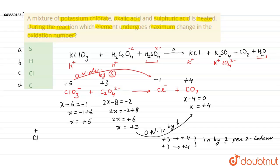In this case, Cl plus 5 to Cl minus 1, maximum change in the oxidation number, that's why our answer is C.